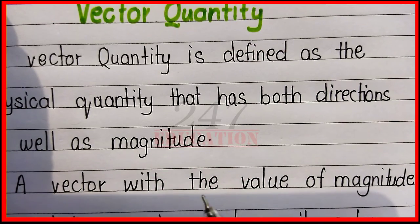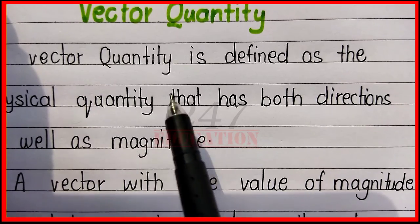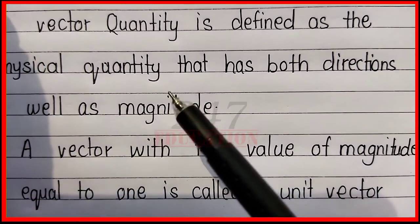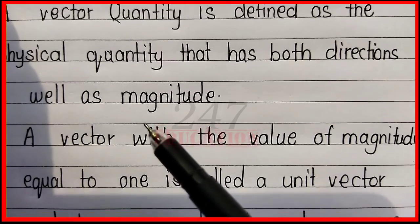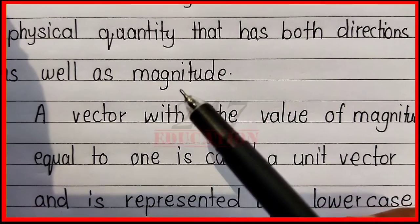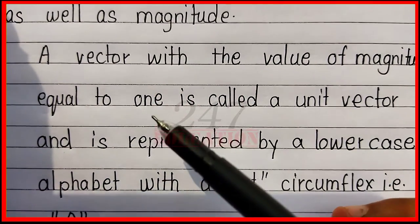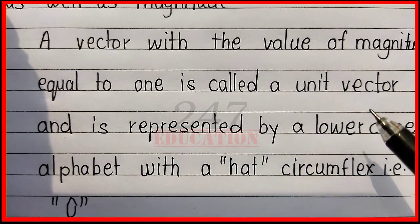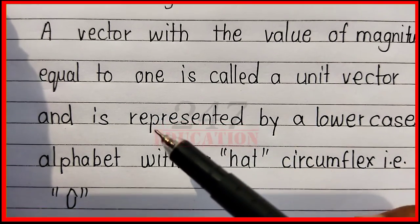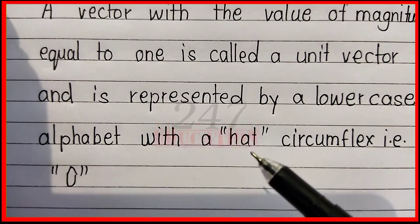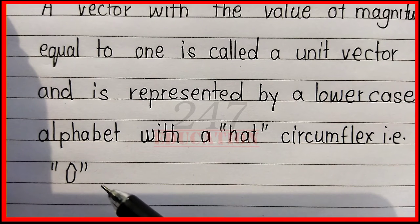To summarize: a vector quantity is defined as the physical quantity that has both direction as well as magnitude. A vector with the value of magnitude equal to one is called a unit vector, and is represented by a lowercase alphabet with a circumflex — that is, û. Thank you.